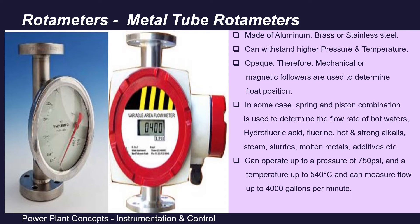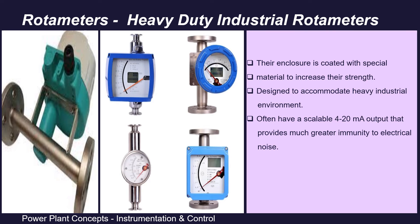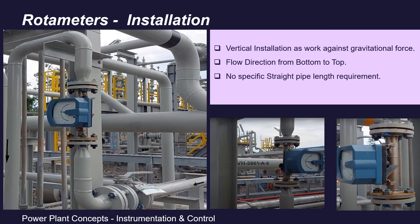Metal tube rotameters are suitable for hydrofluoric acid, fluorine, hot and strong alkali, steam, slurries, molten metals, additives, etc. They can operate up to a pressure of 750 psi and a temperature of 540°C, and can measure volumetric flow up to 4000 gallons per minute. The third type is heavy-duty industrial rotameters — these are flanged armored rotameters, with enclosure coated with special material. They are designed for heavy industrial environments and often have a scalable 4–20 mA output providing greater immunity to electrical noise.